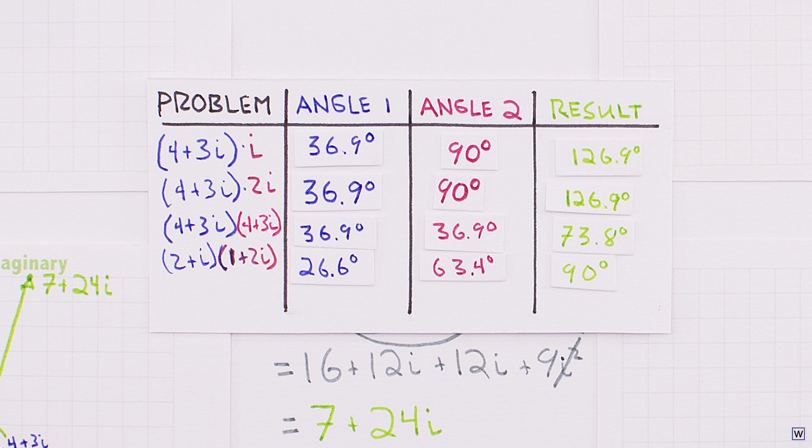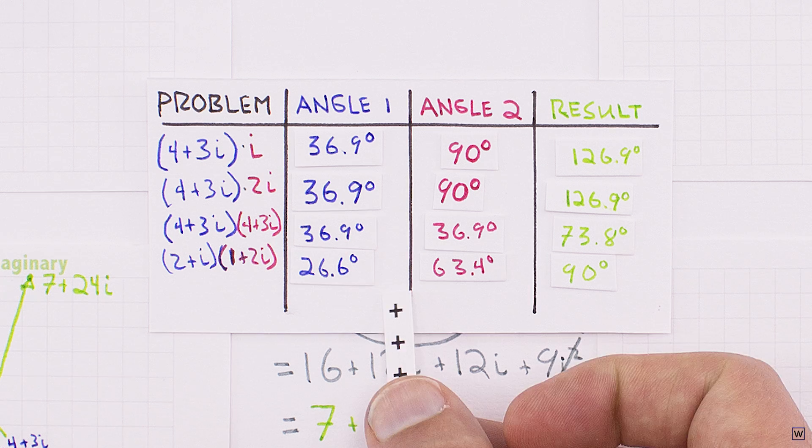After a little pondering, we see that the angle of the result is exactly equal to the angles of the numbers we're multiplying, added together.